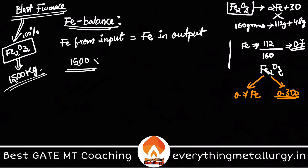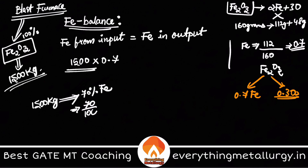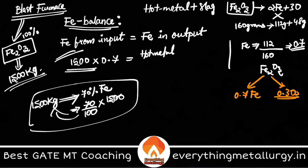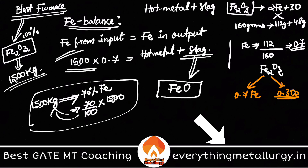So we multiply the total ore weight by the iron fraction. Since 1500 kg of iron ore contains 70% Fe, the Fe input is 70/100 × 1500 kg. On the output side, let's assume we get hot metal plus slag. For hot metal you multiply by its Fe percentage, and for slag you must also account for iron losses, which are present as FeO — so you apply the mass fraction there as well.